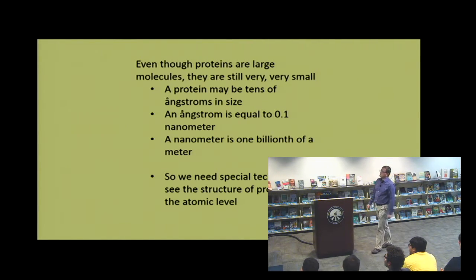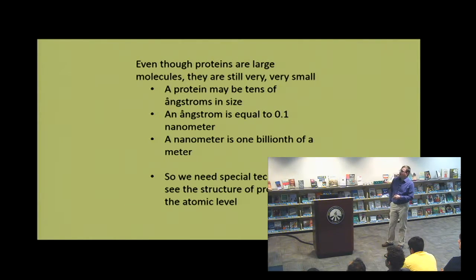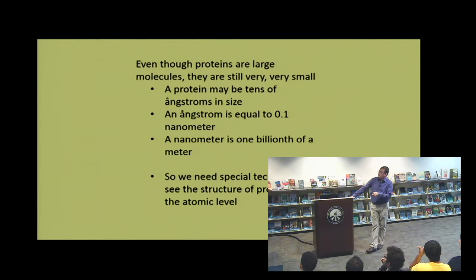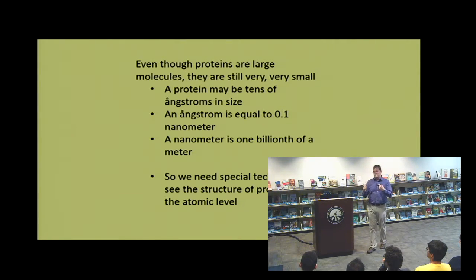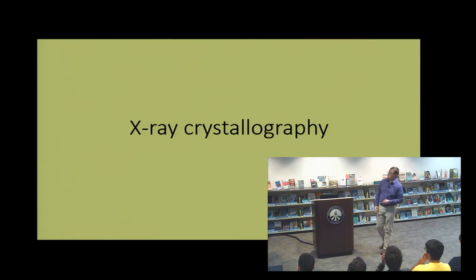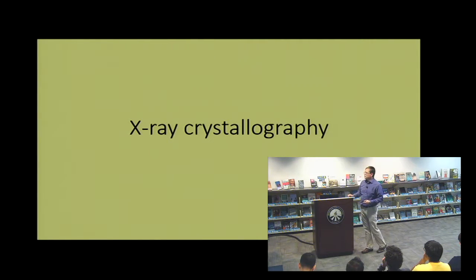Even though proteins are large molecules, they are still very, very small. A protein may average about tens of angstroms in size. An angstrom is basically the distance between atoms in a hydrogen molecule — roughly equal to 0.1 nanometers, and a nanometer is one billionth of a meter. Even an ant, about a millimeter long, contains billions of protein molecules. In order to visualize things that small — particularly at an atomic level — we need special techniques, and that's where X-ray crystallography comes in.